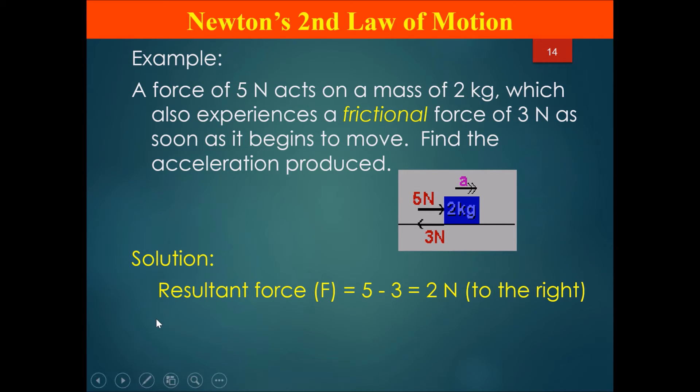You need to get the resultant force first. The resultant force on the object would be 5 N minus 3 N, getting you a final of 2 N to the right. Using the formula F = ma, we convert it into a = F/m. So the acceleration would be 2 N of force divided by 2 kg of mass, getting me 1 m/s² of acceleration.